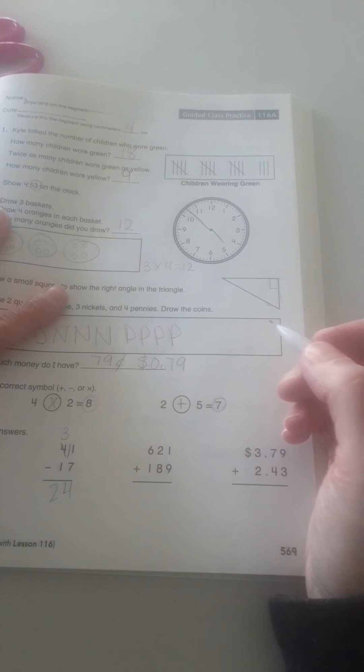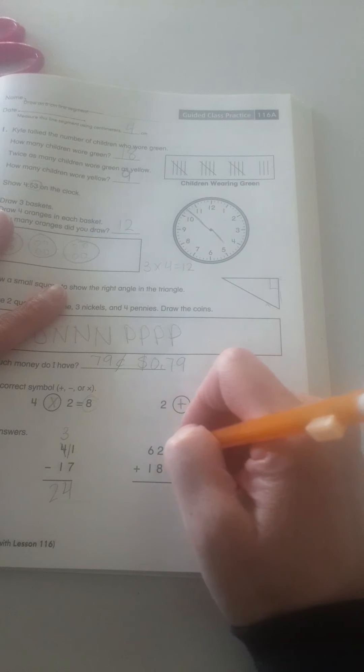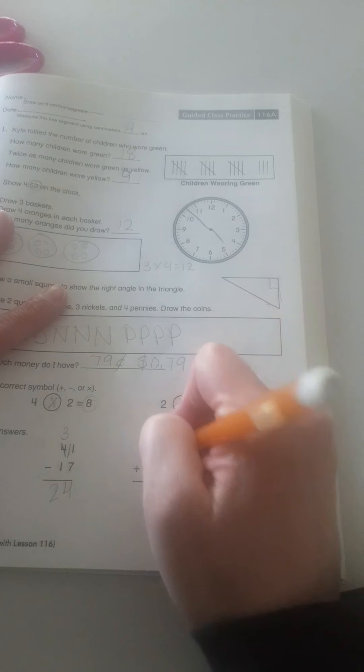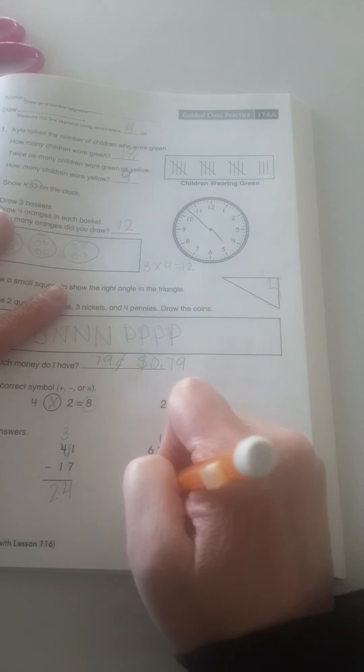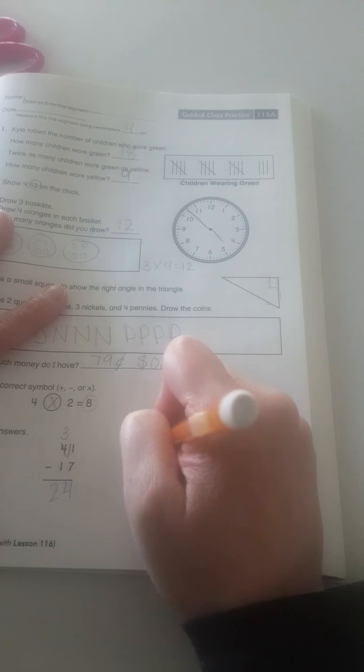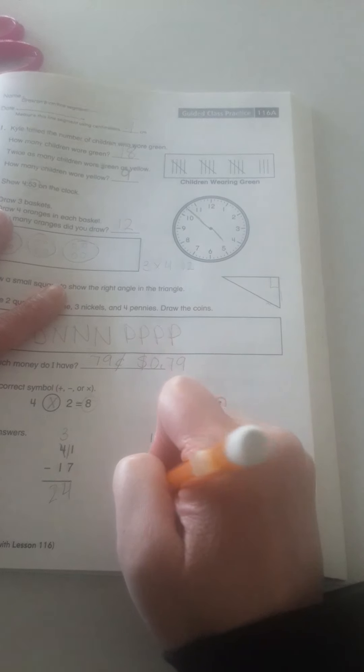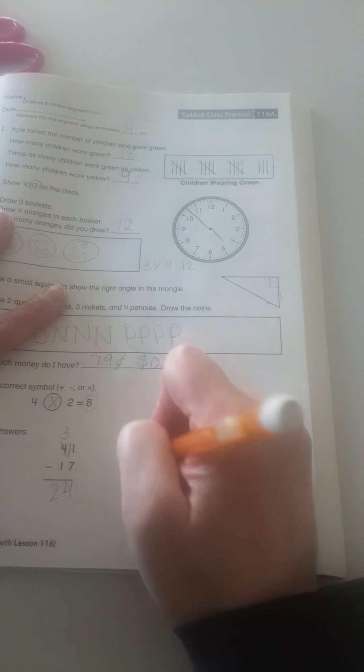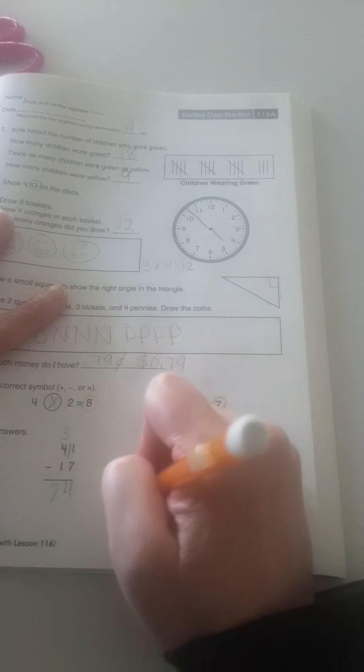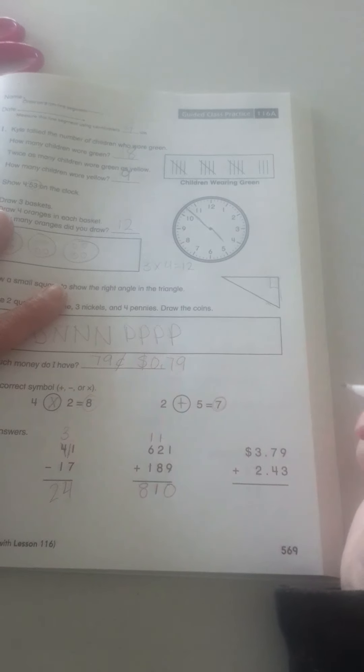Now, I have an addition problem. 621 plus 189. 1 plus 9 is 10. Carry the 1. Bring down the 0. 8 plus 2 plus 1 is 11. Carry the 1. Bring down the 1. 6 plus 1 plus 1 is 8. 8, 10.